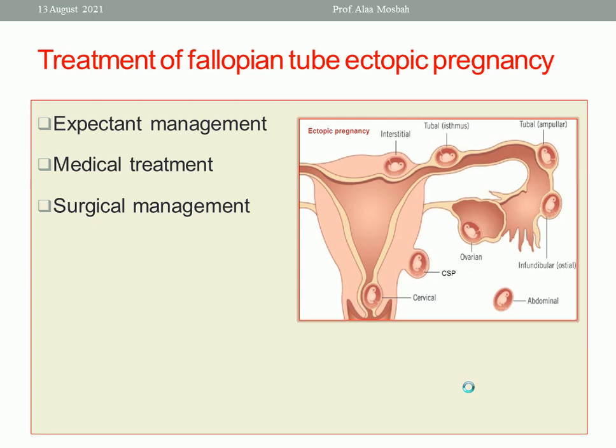There are three lines of treatment for fallopian tube ectopic pregnancy: expectant management — watching to see if beta-hCG regresses to a negative level; medical treatment using methotrexate therapy; and surgical management such as salpingectomy or salpingotomy.